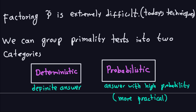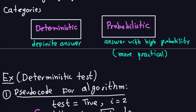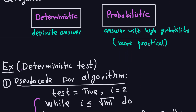Hello and welcome again. In the previous video we started talking about the different kinds of primality tests. One kind is deterministic and the other is probabilistic. In this video I'm going to show you a bit more detail about a couple of examples of deterministic tests and the idea of what probabilistic tests are for primality.